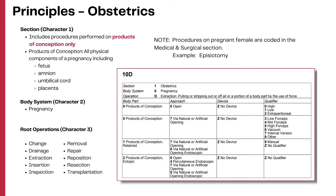This section identifies all procedures done on the products of conception only. The body part value includes products of conception, products of conception retained, and products of conception ectopic. The fetus, amnion, umbilical cord, and placenta are the products of conception identified in this section. The body system character is always pregnancy in this section. Remember, only procedures on the fetus and its products are coded from this section; surgical procedures on the pregnant female, such as episiotomy, are coded to the medical and surgical section.